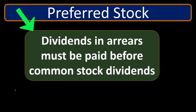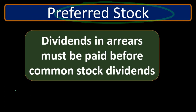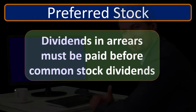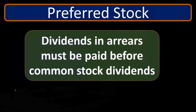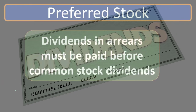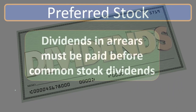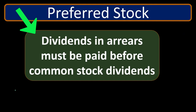Dividends in arrears must be paid before common stock dividends — this is where book problems often come into play. The corporation has the ability to not declare dividends, and that's okay. If they don't declare dividends, they don't have to pay preferred stockholders, and common stockholders get nothing either. But if they do declare a dividend, they must pay preferred stockholders not only for the current year's dividends based on the stated rate, but also any dividends not yet paid in prior years — that's called dividends in arrears. Common stockholders get nothing until all that is paid off.